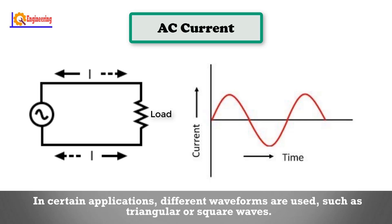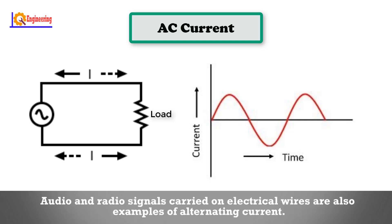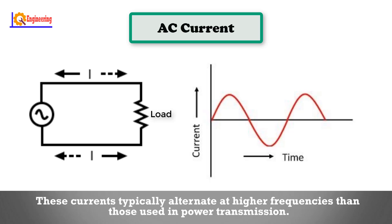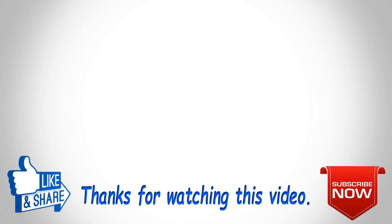Audio and radio signals carried on electrical wires are also examples of alternating current. These types of alternating current carry information encoded or modulated onto the AC signal, such as sound (audio) or images (video). These currents typically alternate at higher frequencies than those used in power transmission.